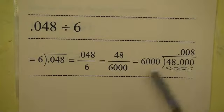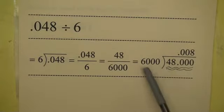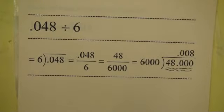So this, we would use 6,000 goes into 48. 6,000 does not go into 48. It doesn't go into 480. It doesn't go into 4,800. But it does go into 48,000 exactly eight times. So therefore, the solution is 8 one-thousandths.